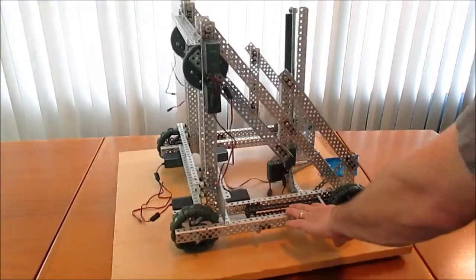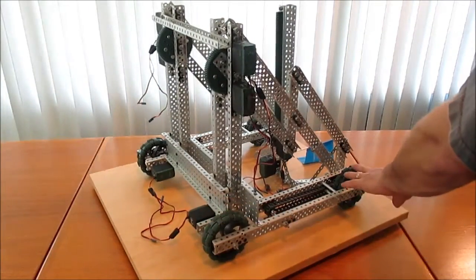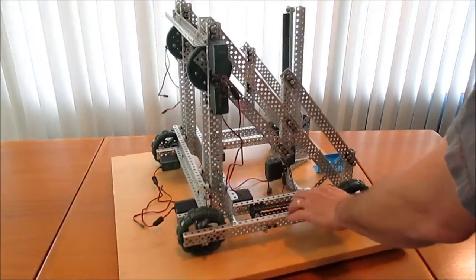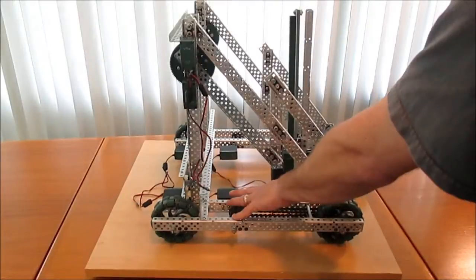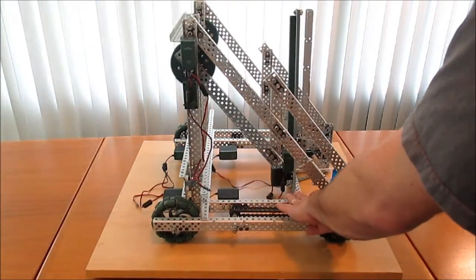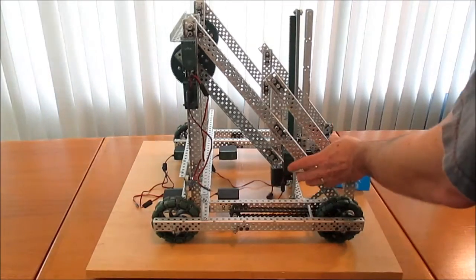This is a four motor drive base, one motor per wheel. We've got a direct connection here. And we've got a one to one ratio chain connection to this motor. The only reason for the chain is to move the motor back and away from the intake.